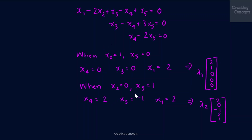In the first case, x2 = 1 and x5 = 0 gives x4 = 0, x3 = 0, and x1 = 2, yielding the vector (2, 1, 0, 0, 0). In the second case, x2 = 0 and x5 = 1 gives x4 = 2, x3 = minus 1, and x1 = 2, yielding the vector (2, 0, minus 1, 2, 1). Any multiple of each vector is also a solution to Ax = 0, so I multiply them by scalars lambda 1 and lambda 2 respectively.